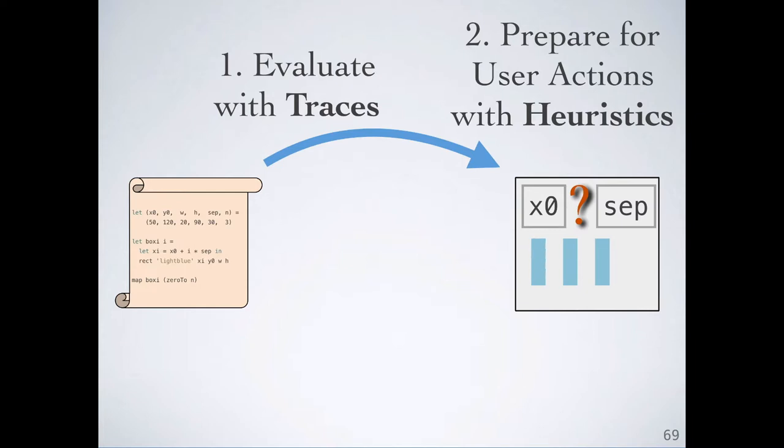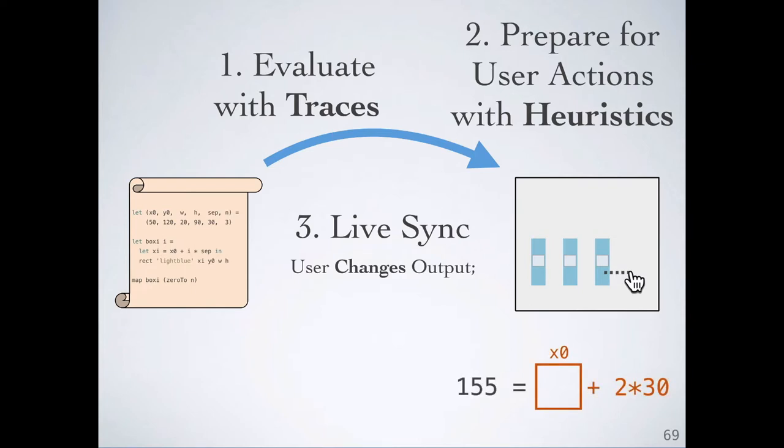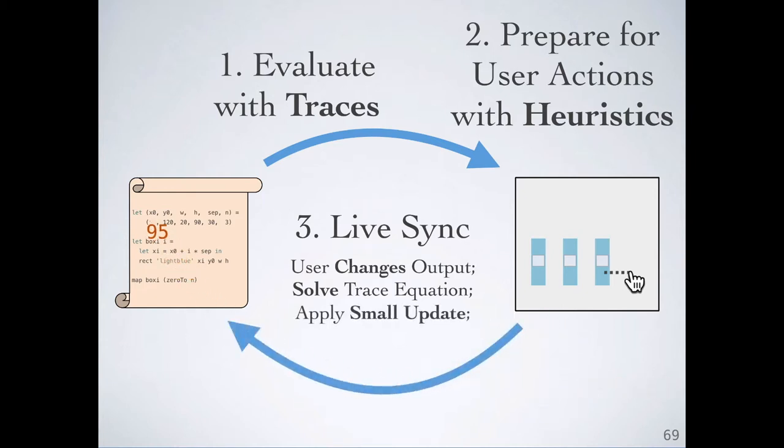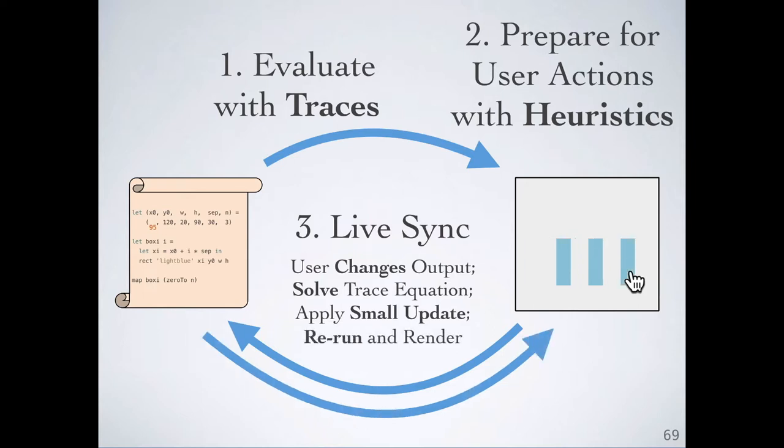In our boxes example, we set the first box to change x0, the second box will change sep, and the third box will change x0. Now we're ready for live synchronization. When the user drags the third box, we form a trace equation, which we solve for x0. We use this value to make a small update to x0 in the program. Immediately, we re-run the program and render the new output. Since we solve, update, and re-render continuously as the user drags the mouse, the user sees the boxes follow their mouse movements in real time. This is live synchronization.